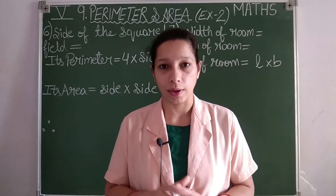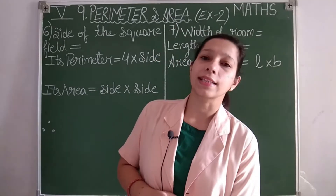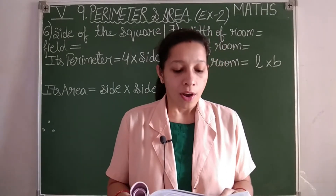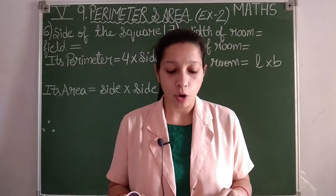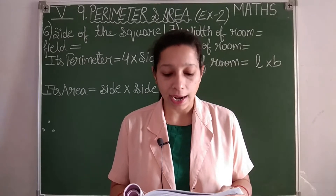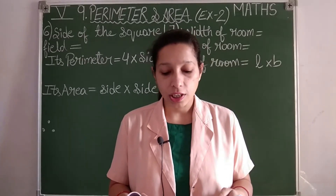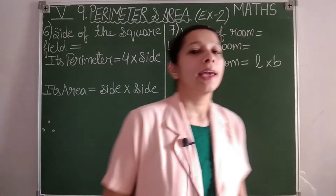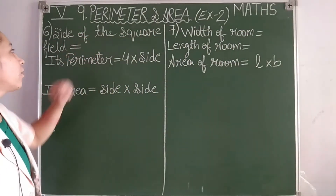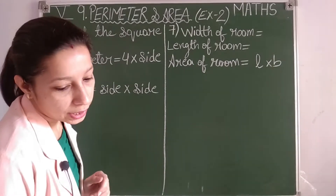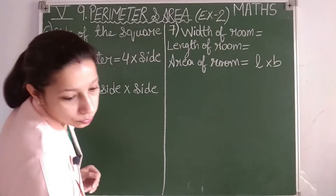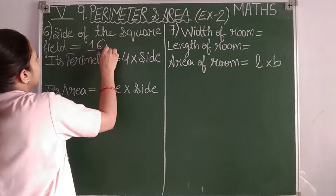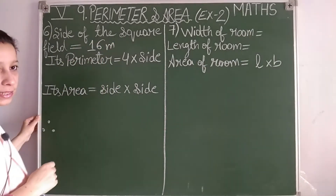Now let us continue with problem number six. Find the area and perimeter of a square field of side 16 meters — which is more, area or perimeter? Here the side of the square field is given as 16 meters.